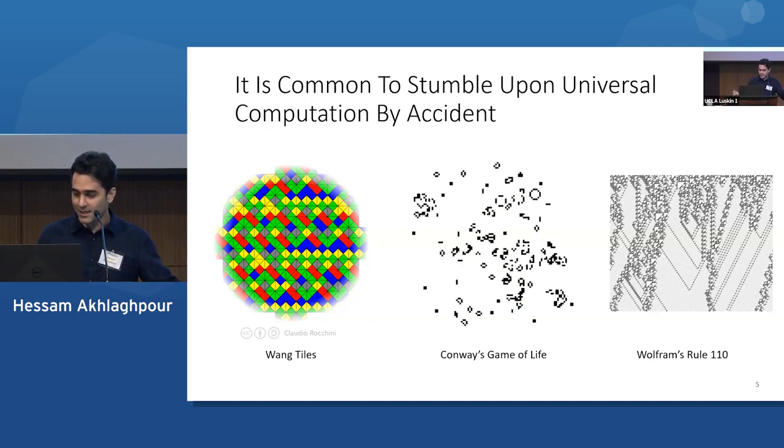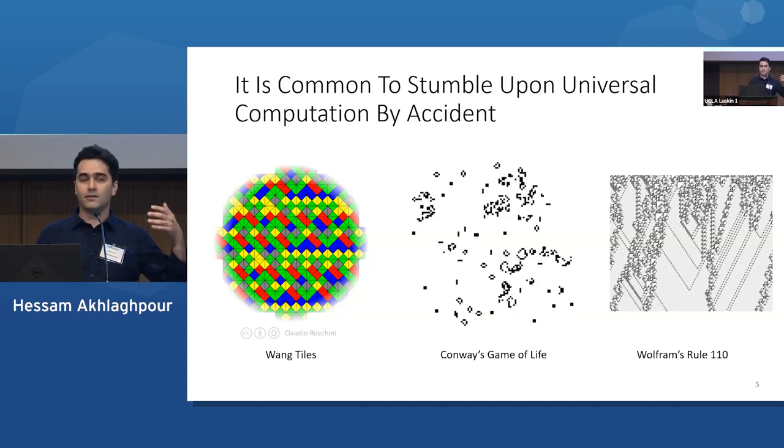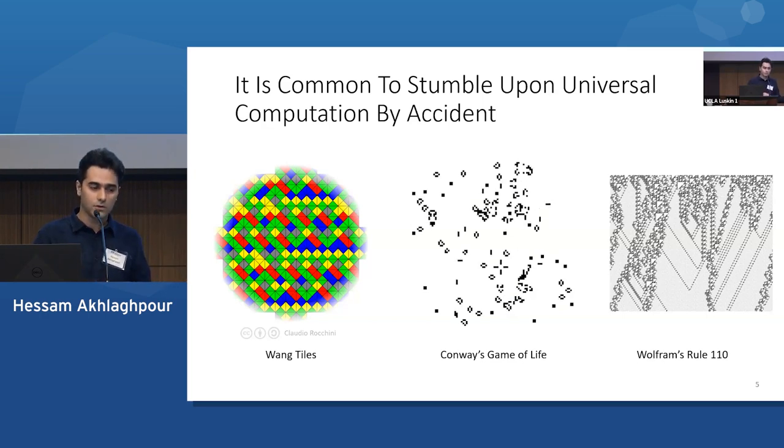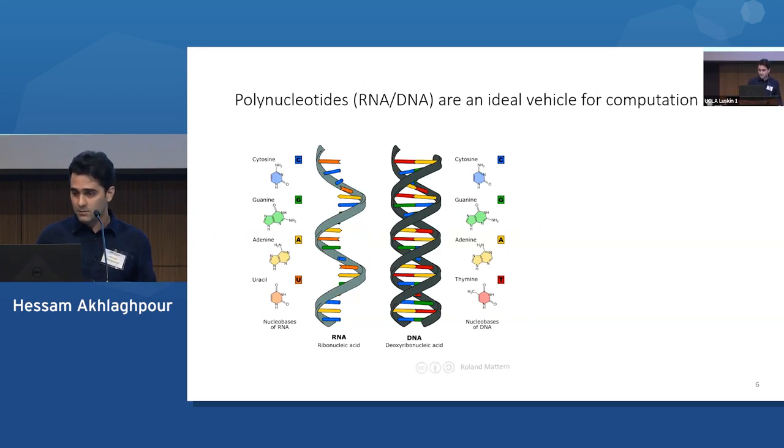So let's just entertain for the moment the idea that there is a natural universal computer, but we just haven't discovered it yet. What could it look like? And I want to argue that one of the most promising places to search for such a system is at the level of DNA and RNA. Now, people have recognized the computational potential of DNA and RNA going all the way back to the 70s, and there's been lots of important work on building universal computers from these molecules, including work from Eric Winfrey, who's one of the leading figures in this field. You'll be hearing from him later today.